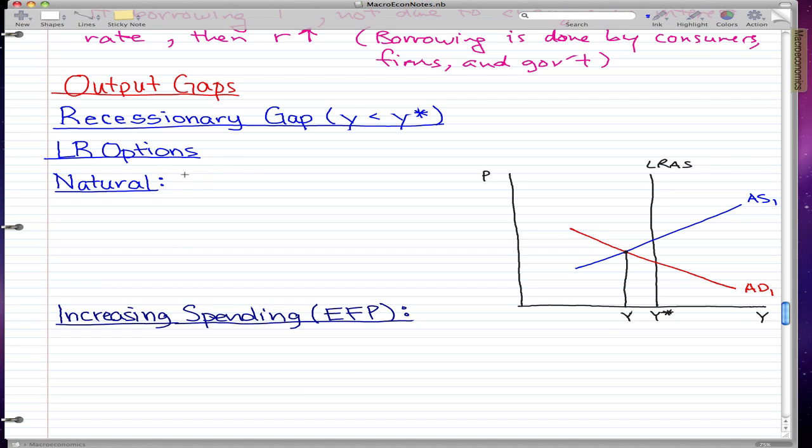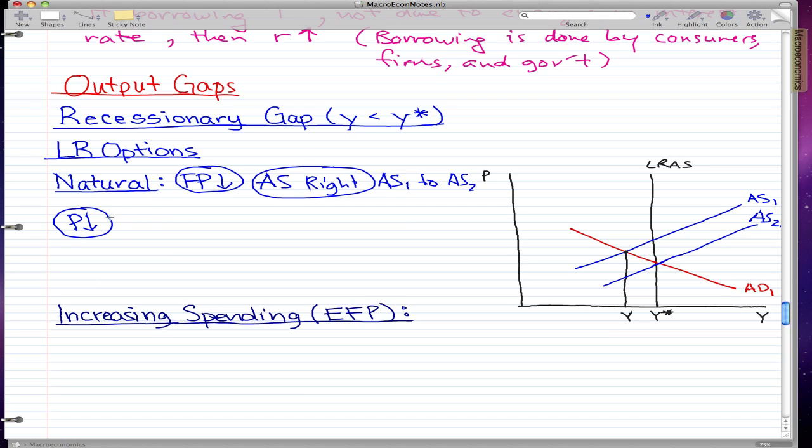That's by doing nothing. In the natural way, what happens is the factor prices go down, aggregate supply moves right from AS1 to AS2. Now let's just reflect this in our graph. And this will be AS2. As you can see, the price has fallen. And when the price falls, you know what happens to money demand and interest rate. They both fall as well.